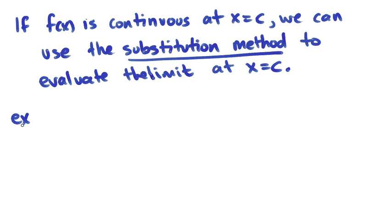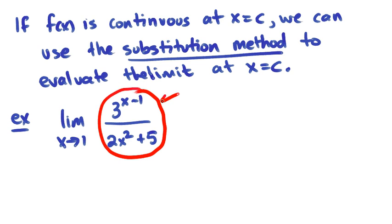Let's take a look at one example of this. If I've got the limit as x approaches one of three to the x minus one over two x squared plus five. First, let's take a look at the continuity of this part. The numerator is a three to the x graph with a substitution. x has been replaced by x minus one, so that's a composition of functions. That's okay, they're both continuous. And the denominator is a polynomial.